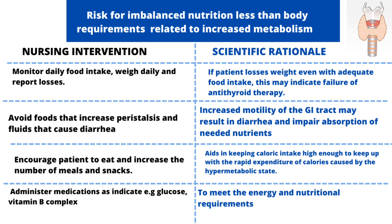The rationale is that once gastrointestinal motility is increased, it may result in diarrhea and impair the absorption of needed nutrients from the food eaten by the patient. The next nursing intervention is to encourage the patient to eat and increase the number of meals and snacks daily. This will aid in keeping their calorie intake high enough to match the energy expenditure resulting from their hypermetabolic state.